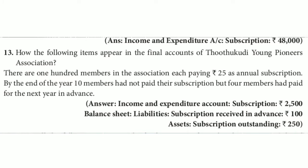How do the following items appear in the final accounts of Young Pioneers Association? There are 100 members in the association, each paying Rs.25 as annual subscription. By the end of the year, 10 members had not paid their subscription, and 10 members had paid for the next year in advance.